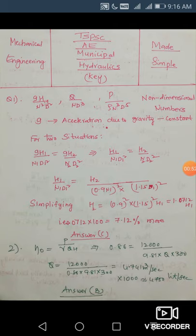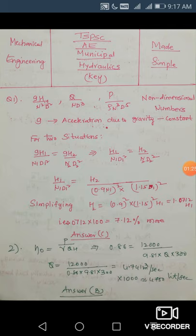The notation is: h is the head, n is the speed in rpm or revolutions per second or minute, d is the diameter of the pump or turbine, q is the discharge in m³/s, p is power in kilowatts or watts, and ρ is the density in kg/m³. Since g is constant, we get h1/n1²d1² = h2/n2²d2². Substituting h1, n1, d1, n2, d2 you can find h2.